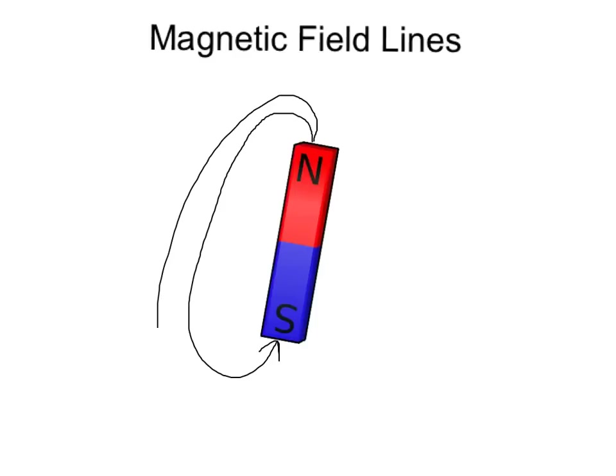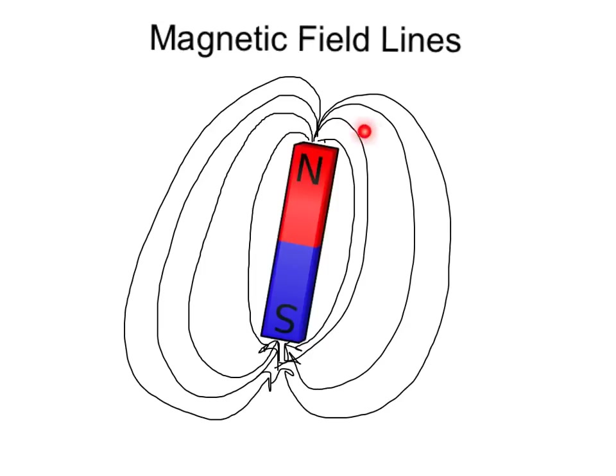There is an infinite amount of these magnetic field lines going from north to south. You can observe that there is a higher density of magnetic field lines here near the poles as opposed to further out. This is important when understanding the concept of magnetic flux.